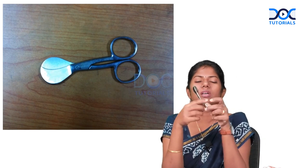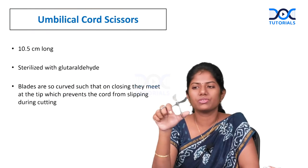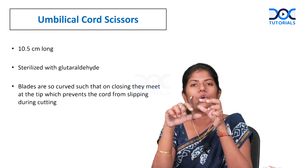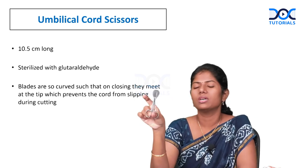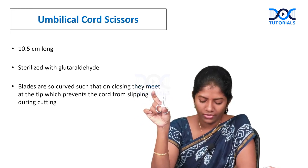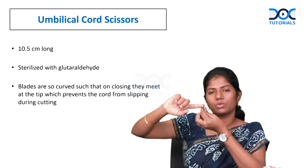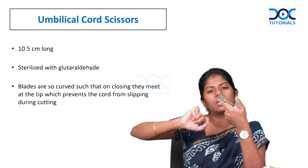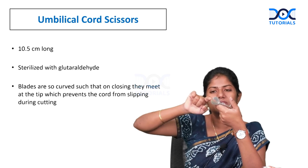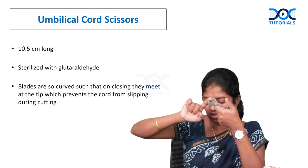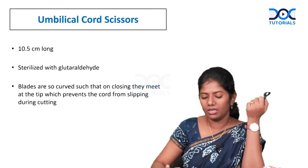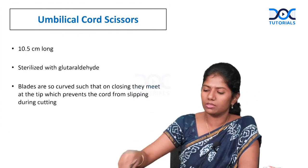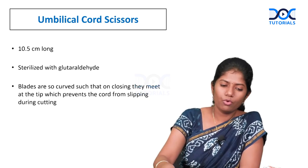The umbilical cord cutting scissors is approximately 10.5 cm long with curved blades. The middle portion of the blades does not meet but the tips face each other and meet, which prevents the cord from slipping while cutting.